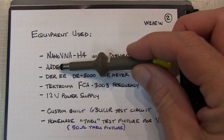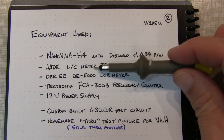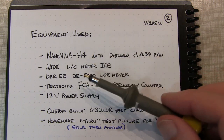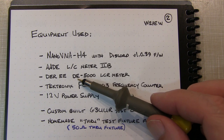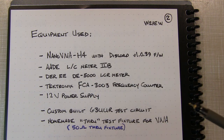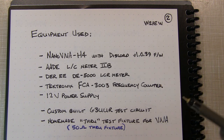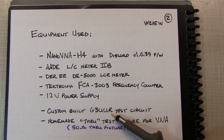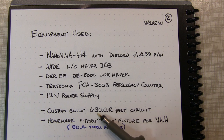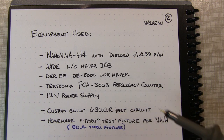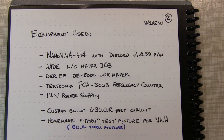The equipment we'll use in this video: my nanoVNA H4 with Dislord version 1.0.39 firmware, which gives me 401 measurement points — helpful for getting a more precise measurement at the series and parallel resonant frequency points. I'm also going to measure the holder capacitance two ways: one using my AADE almost-all-digital-electronics LC meter, and then back that up using my DE5000 LCR meter. One of the measurement techniques needs a frequency counter — that's the G3UUR test method — so I've got a custom-built G3UUR test circuit.